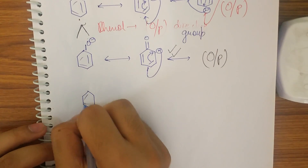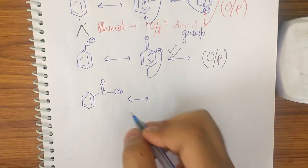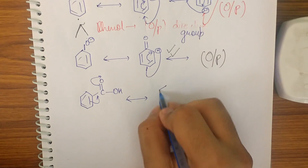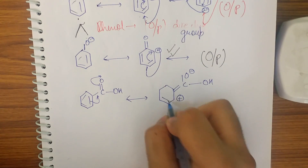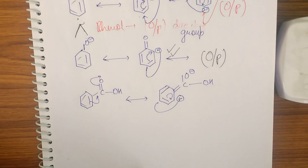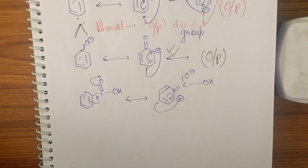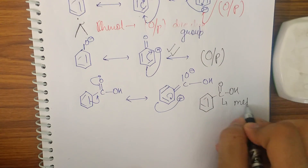For benzoic acid: drawing resonance structures, the C=O group withdraws electrons — a positive sign appears on the ring at the ortho and para positions. This makes ortho and para positions electron deficient. The electrophile will therefore attack the meta position (which is comparatively electron-rich), so benzoic acid is a meta-directing group.